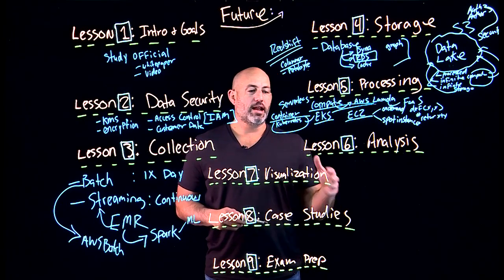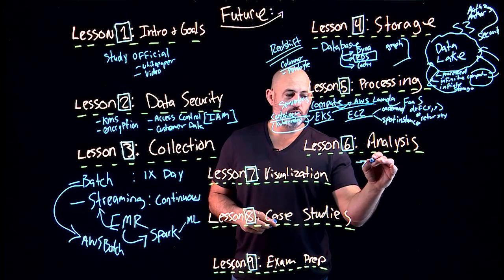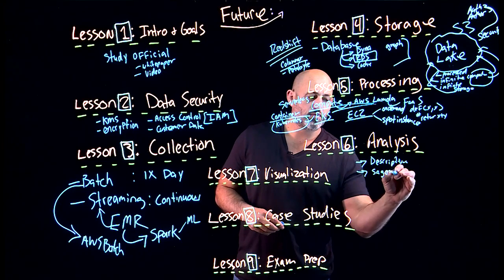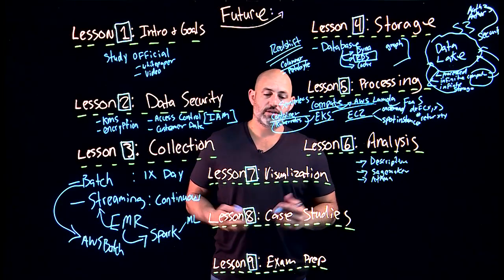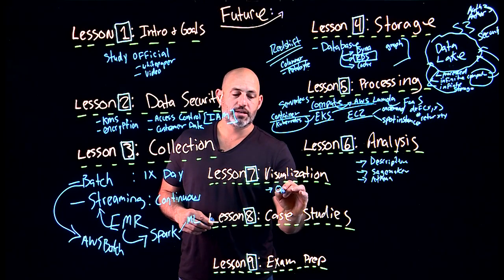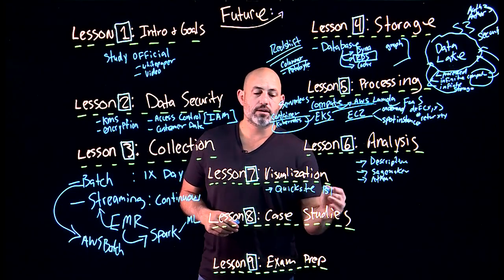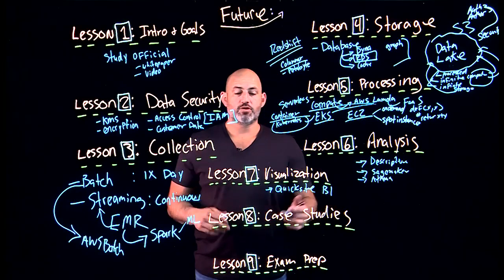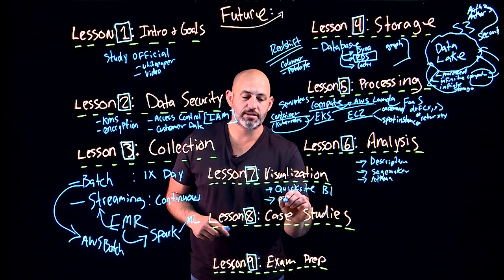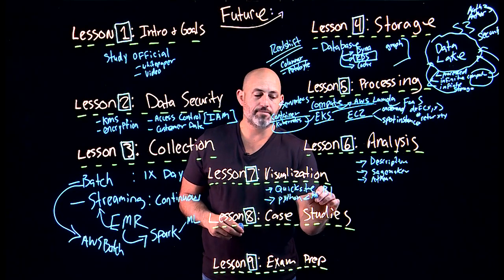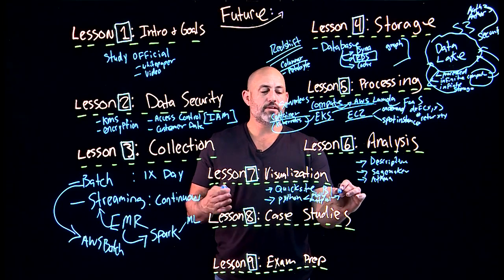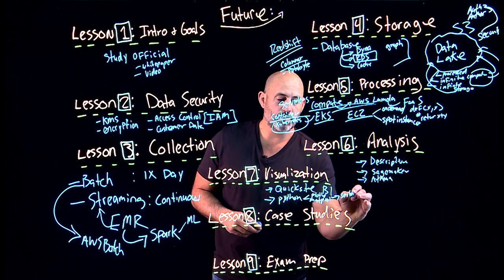In lesson six, we talked about analysis. Key takeaways include being aware of tools that can perform descriptive statistics, as well as tools like SageMaker and Athena for analysis operations. Lesson seven covers visualization, and the big takeaway is Amazon QuickSight, which does point-and-click business intelligence. You should also be aware of Python-based visualization libraries such as Plotly, Matplotlib, and Seaborn, which are important to use as a study mechanism.